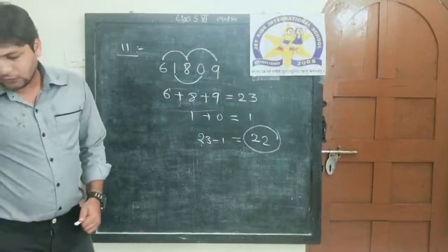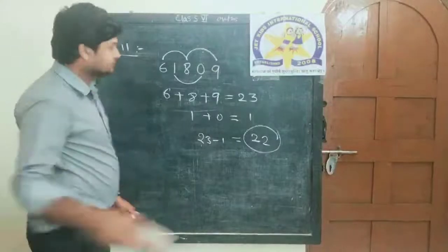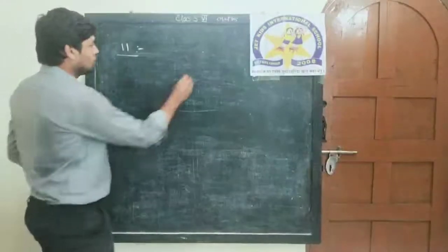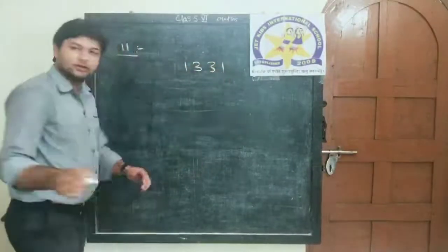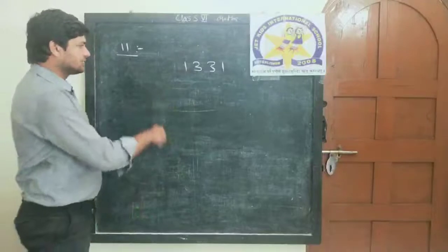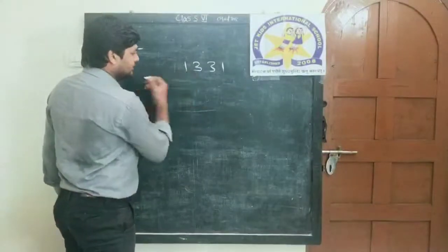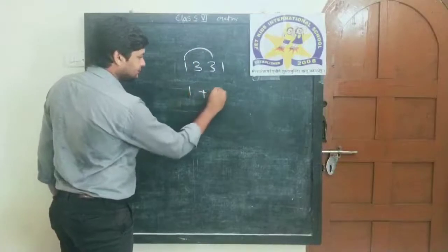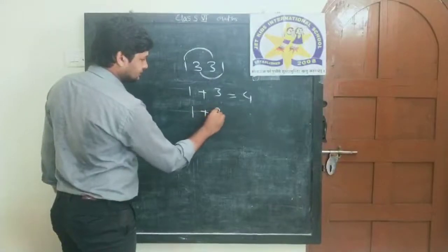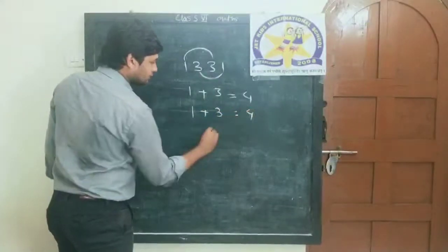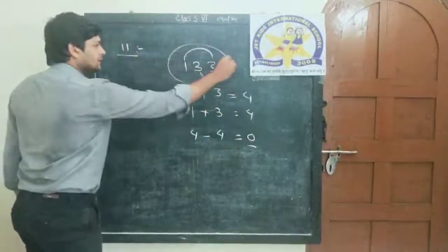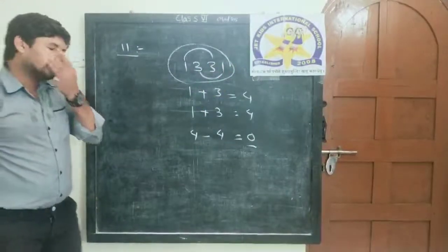One more example: 1331. Pause the video and solve it. Now check your answer. Taking alternate digits: 1 plus 3 equals 4 from one set of positions, and 3 plus 1 equals 4 from the other. The difference: 4 minus 4 equals 0. Zero is divisible by 11, so 1331 is also divisible by 11.